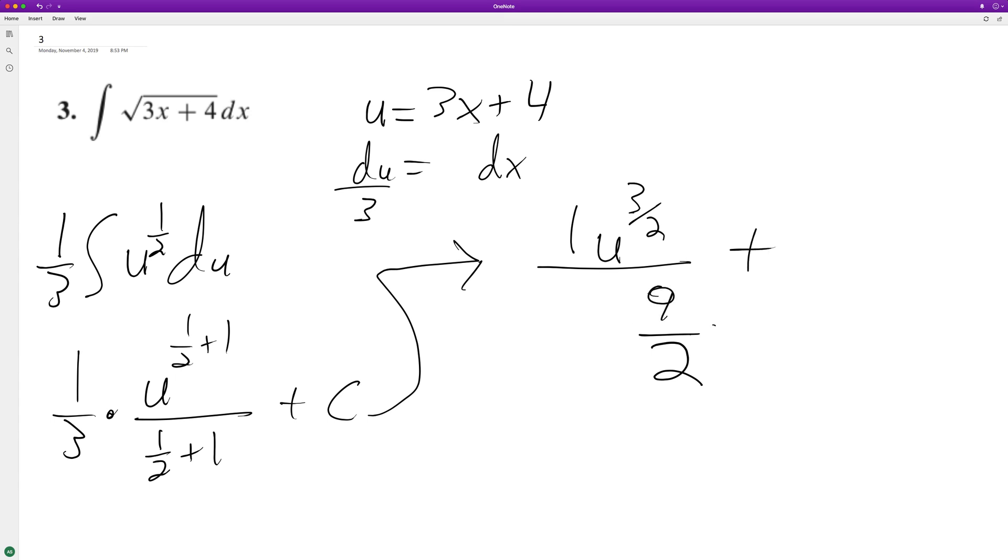And because we're dividing by this, we can multiply by the reciprocal. So we end up with 2 9ths. And we'll go ahead and substitute back in 3x plus 4 raised to the 3 halves plus c.